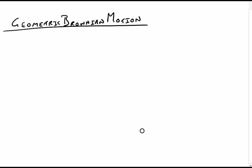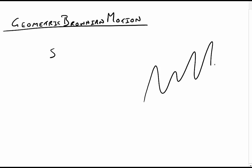In this video we're going to be talking about geometric Brownian motion. What we're going to do is apply Brownian motion to share prices or asset prices in financial derivatives. We presume that a share price will follow this kind of Brownian motion.